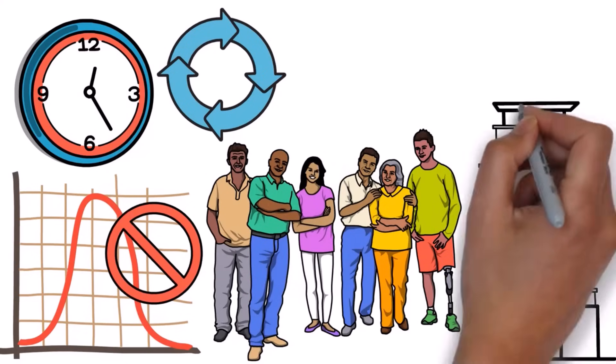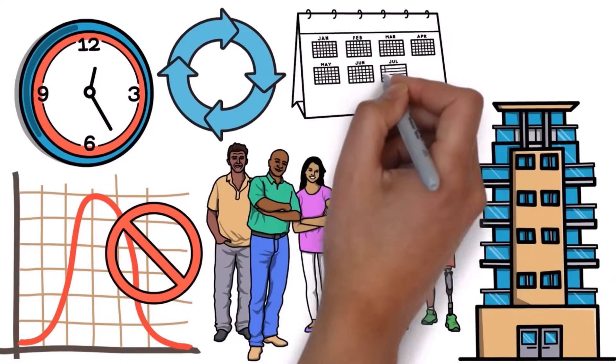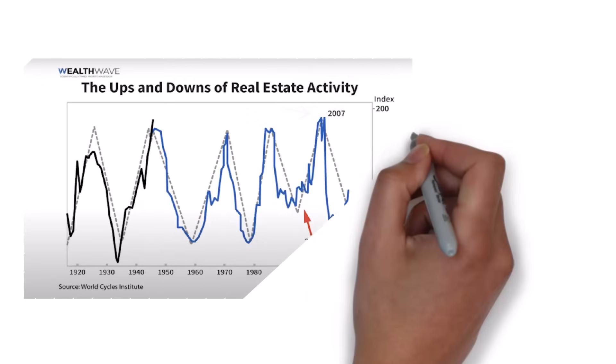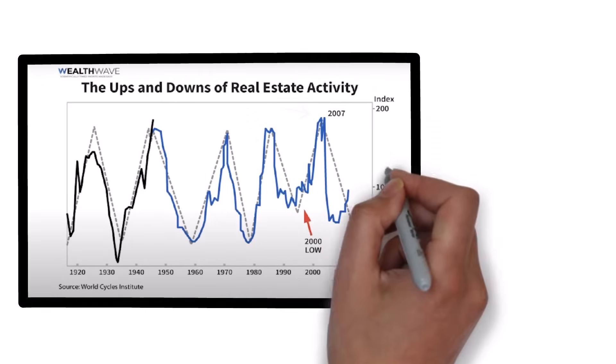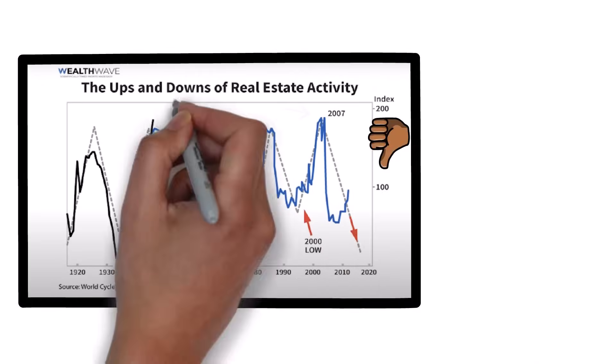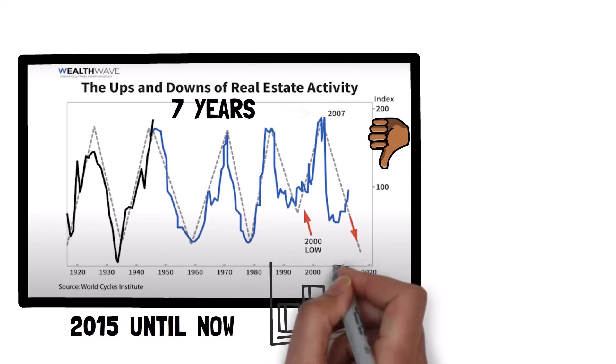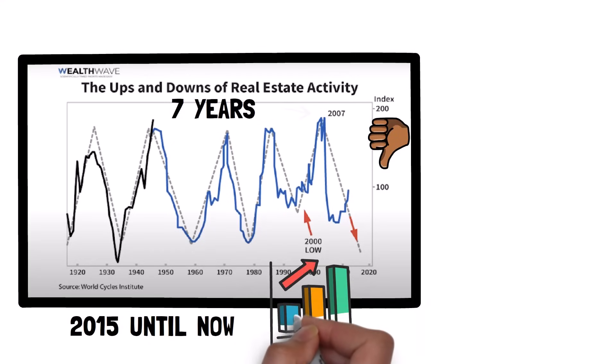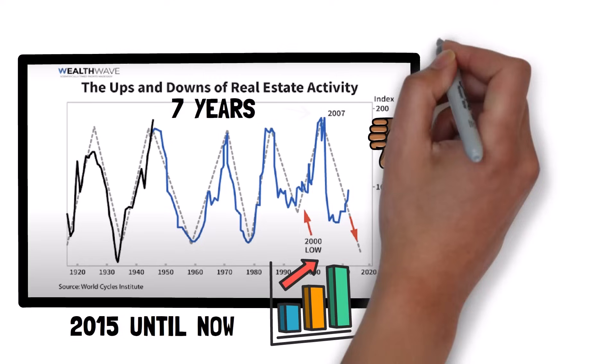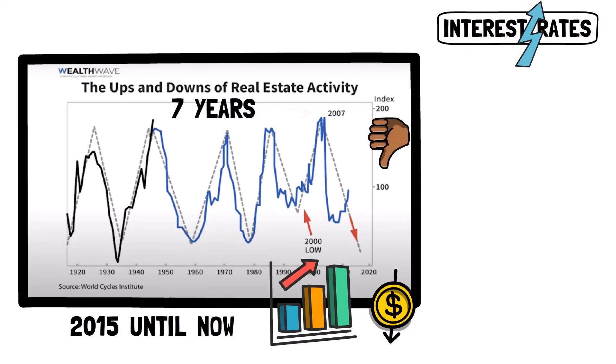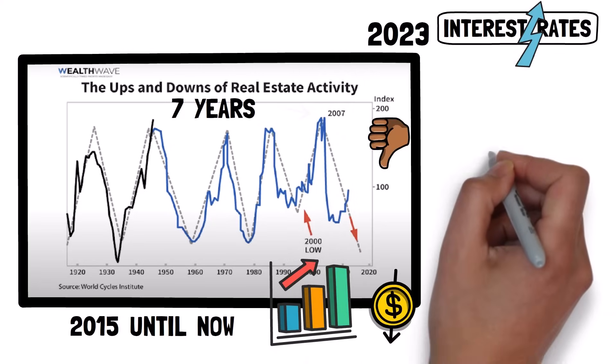The real estate market usually goes through cycles that last for seven to ten years. So if you look back, in 2008, the market started to go down and it stayed bad until 2015, which was seven years. Since then, from 2015 until now in 2023, the market has been doing well. At the end of 2022, prices dropped a bit because interest rates went up, but they have mostly stayed the same or even gone up a little in 2023.